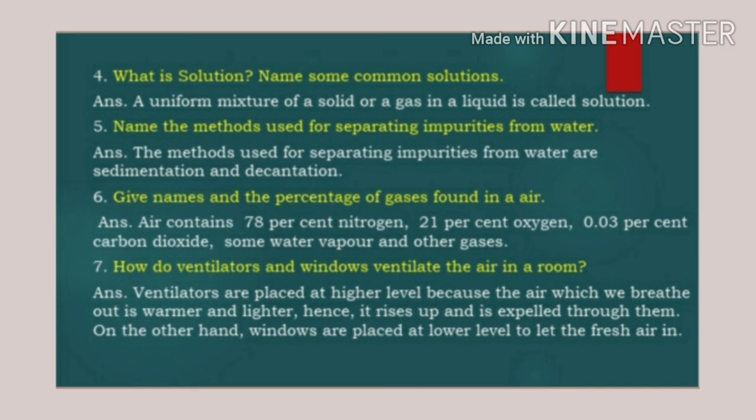Question number seven: How do ventilators and windows ventilate the air in a room? Answer: Ventilators are placed at a higher level because the air which we breathe out is warmer and lighter. Hence it rises up and is expelled through them. On the other hand, windows are placed at lower level to let the fresh air in.